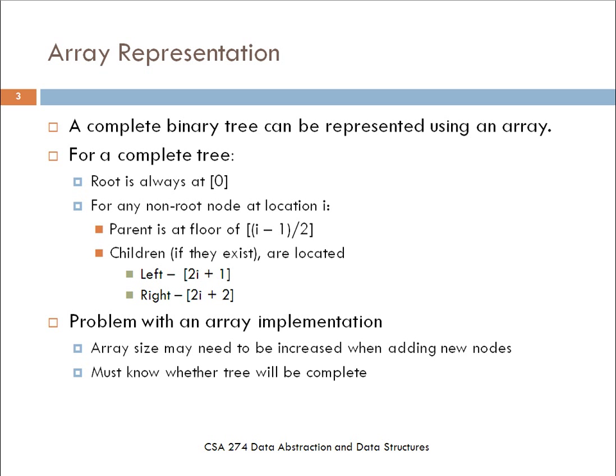One of the nice things about a complete binary tree is that you can represent it using an array. When using this array representation, you have the root at location 0, and then for any non-root node at location i, you can find its parents by taking the floor of i minus 1 divided by 2. And then you can find the children, if they exist, at 2i plus 1 for the left child and 2i plus 2 for the right child.